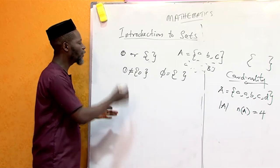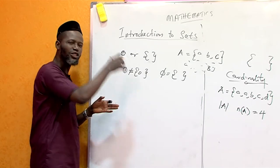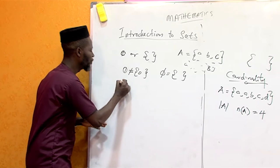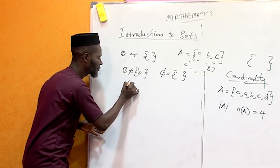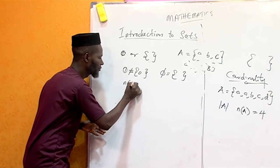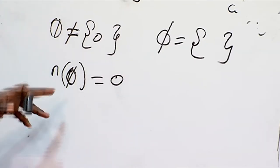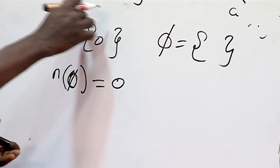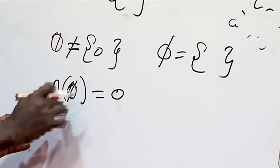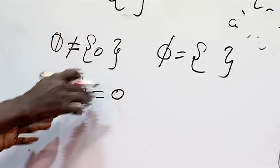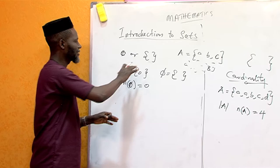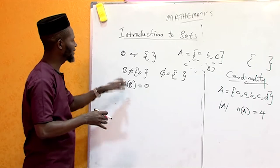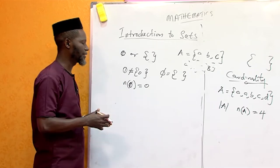If you want to write the cardinality of the empty set, the number of elements in the empty set is equal to zero. That is, it doesn't contain any element. That is cardinality and the empty set.